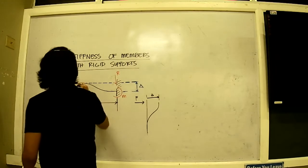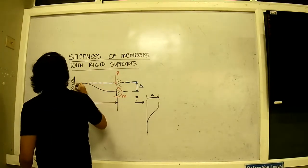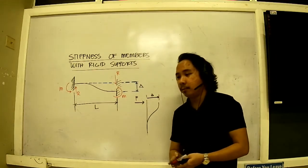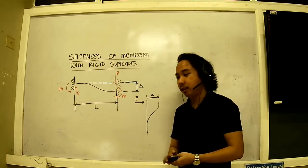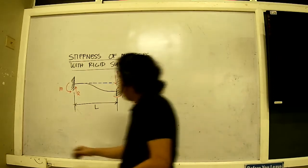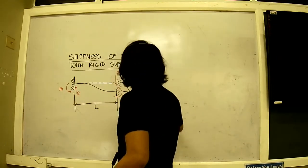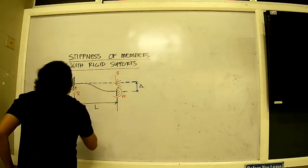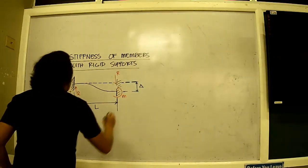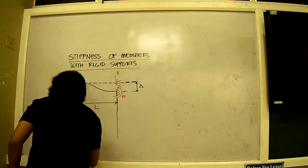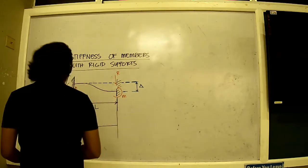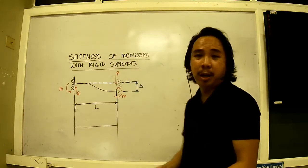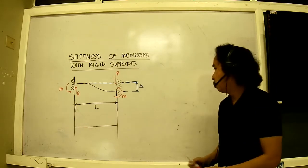If R is going down here, R should be going up here to maintain equilibrium in the vertical motion. Now with that in mind, let's try to analyze this. There are lots of ways to go about this, but we can also use conjugate beam method for simplicity. I find it more graphical, much more appealing for visual learners.